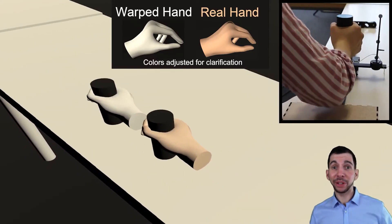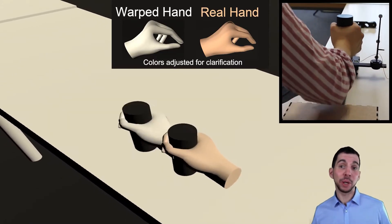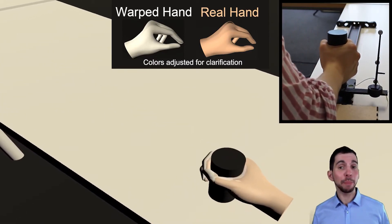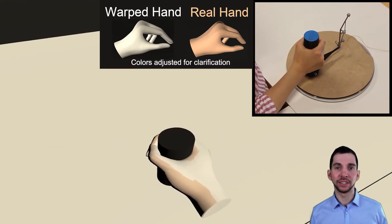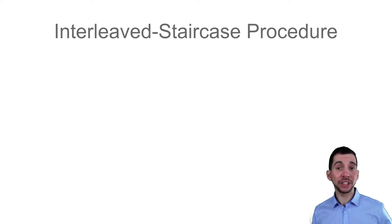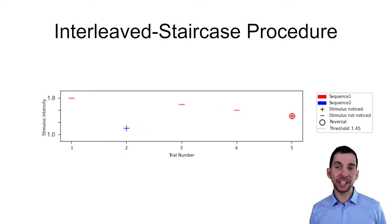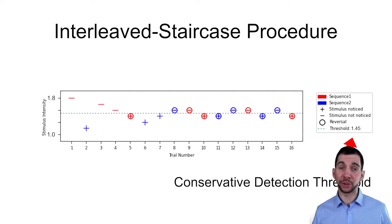To investigate potential effects, we apply CD ratio manipulations, scaling up participants' virtual movement until they notice the manipulation. By collecting participants' responses through an adaptive interleaved staircase procedure, we determine conservative detection thresholds for the different conditions.